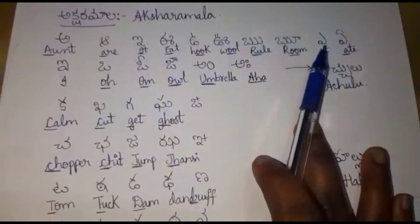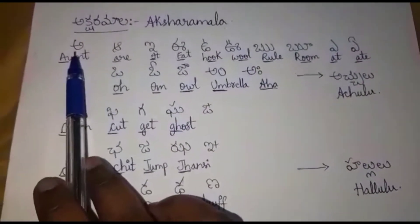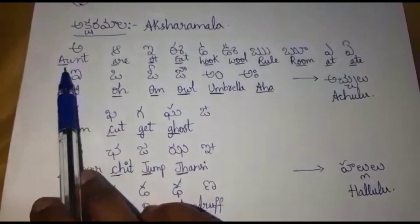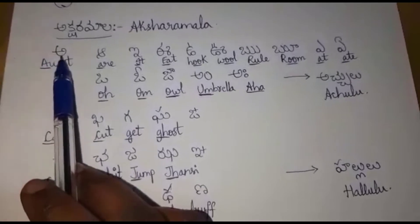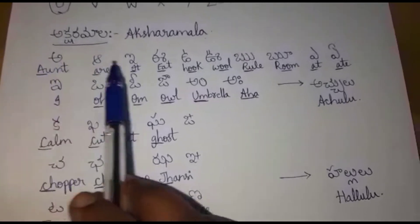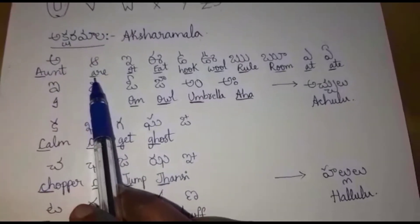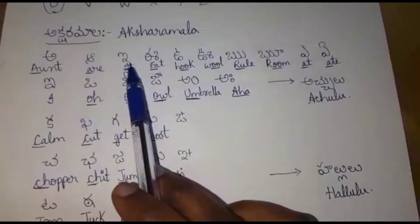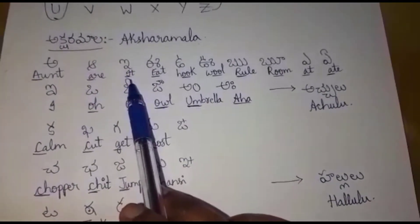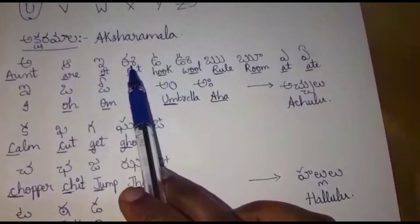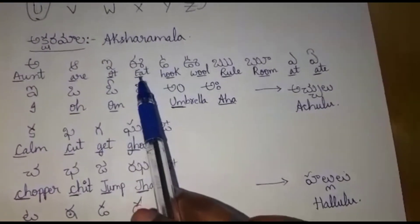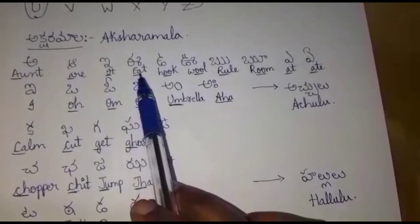Coming to the letters, A, Ant. You can easily find the pronunciation, A, Ant. Aa, R, How are you? E, It. It is a dog. Ee, Eat.